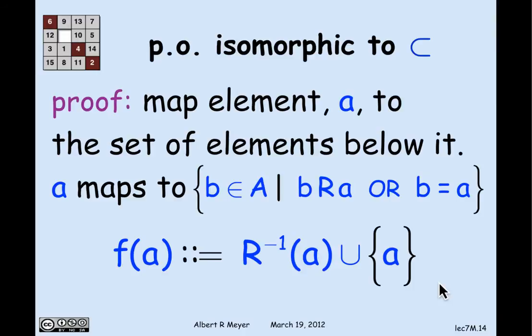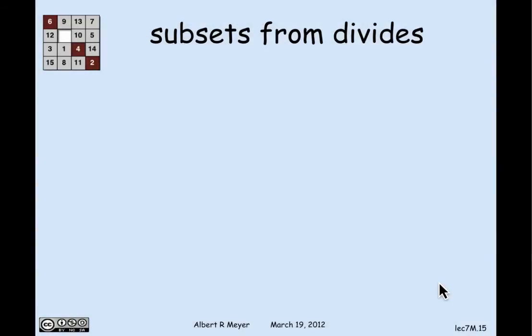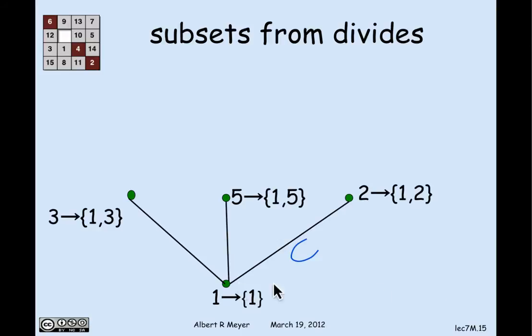Let's just illustrate that by the example of how do you turn the divides relation into the subset relation. Well, the smallest element in the proper divides example was the number 1. And I'm going to map it to the set consisting of 1, which is all of the elements that properly divide 1 along with 1. And then I'm going to map the number 3 to all of the elements that properly divide 3 along with 3. And that is 1 and 3. 5 maps to 1 and 5. 2 maps to 1 and 2.